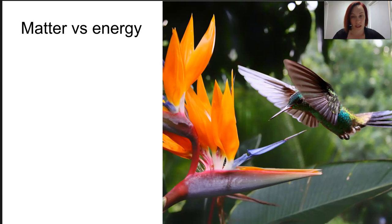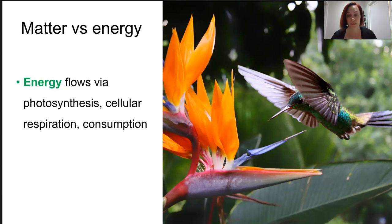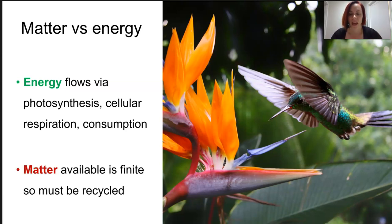Energy flows through the ecosystem via photosynthesis, we know that. Cellular respiration and the transfer of biomass through consumption. We're talking food chains here. The sun provides a constant external supply of that energy to keep the system going, even when it's lost from waste or respiration or heat.